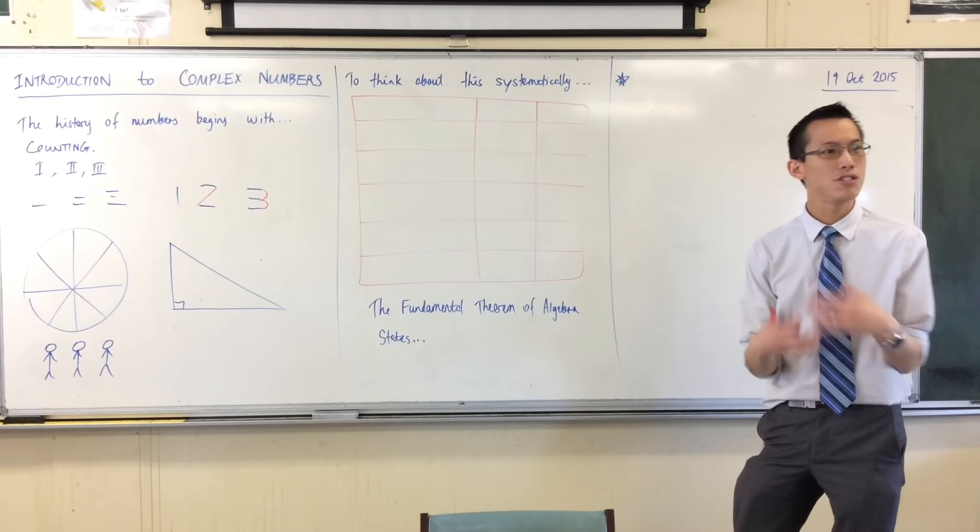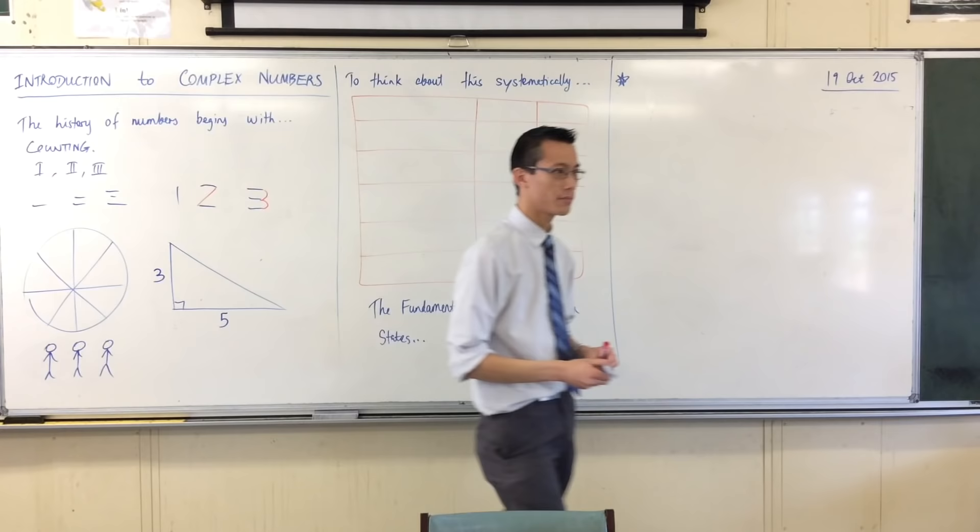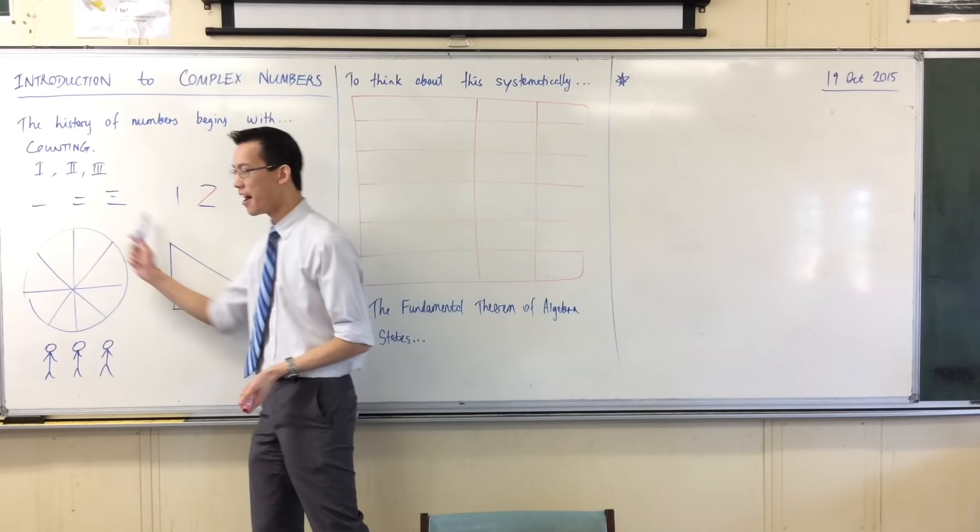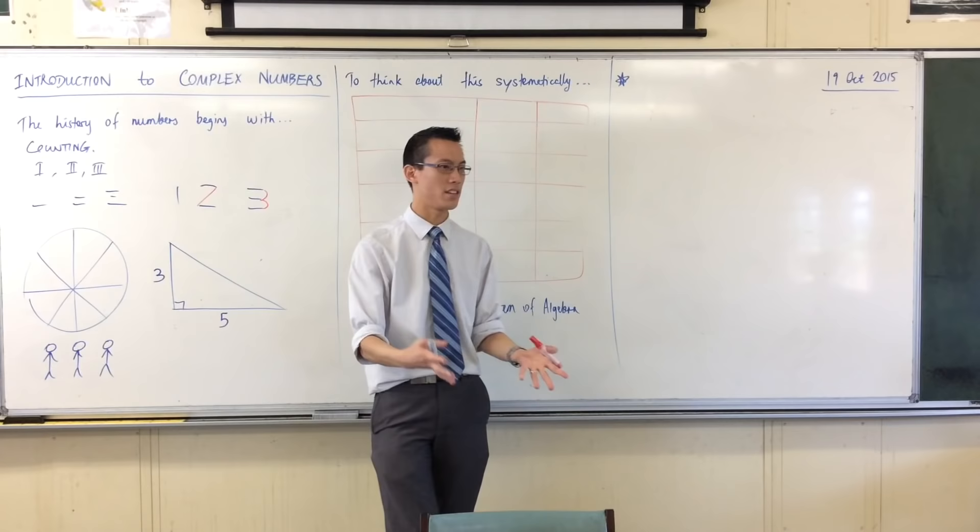New numbers have to be introduced. In the same way, very quickly, the Greeks realized that even if you've got whole number lengths here and here, what you get out here is a different kind of number again. It's not another kind of number like this. It's not a ratio. It's something different. They argued for a long time as to what it was, but they knew it wasn't like these guys. It wasn't a counting number. It wasn't a rational number.